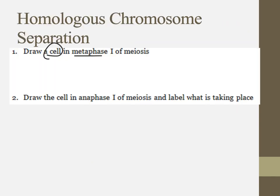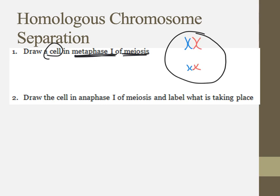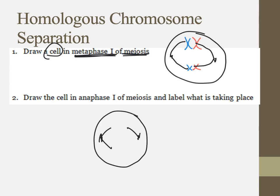In metaphase I of meiosis, chromosomes are still lined up in homologous pairs — not all up and down across the equatorial plate like in mitosis. Spindle fibers attach to only one of each homologous pair. In anaphase I, those spindle fibers pull the homologous pairs apart, so we no longer have homologous pairs after anaphase I — they are separated.